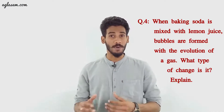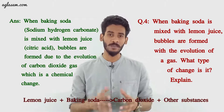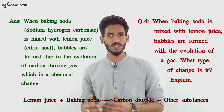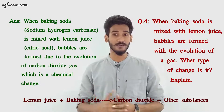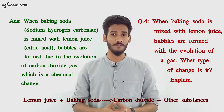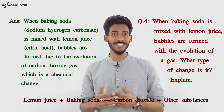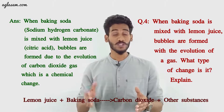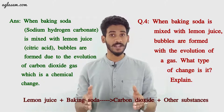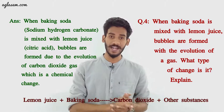Question 4: When baking soda is mixed with lemon juice, bubbles are formed with the evolution of a gas. What type of change is it? When baking soda (sodium hydrogen carbonate) is mixed with lemon juice (citric acid), bubbles are formed due to the evolution of carbon dioxide gas. This is a chemical change, as citric acid reacts with sodium hydrogen carbonate producing CO₂.